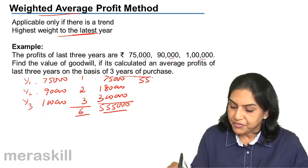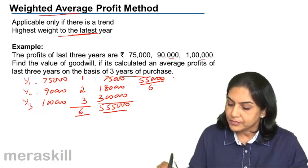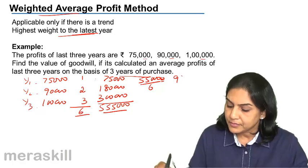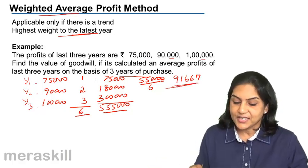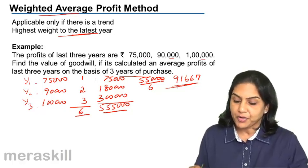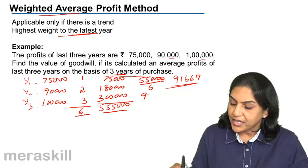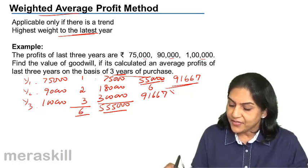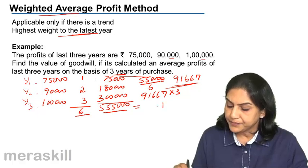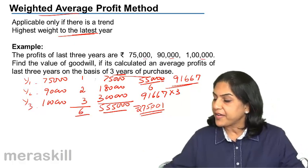So 5,55,000 divided by 6, 91,667 would be the average profit. This average profit into again 3 years purchase, so 91,667 into 3. The value of goodwill would be 2,75,000.